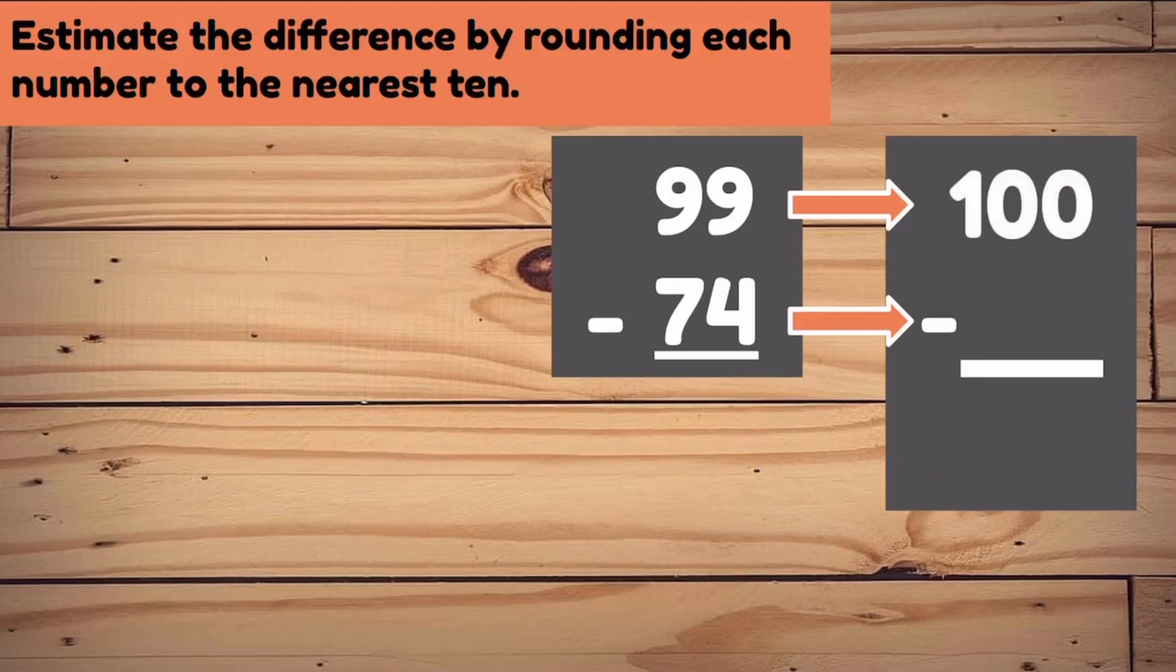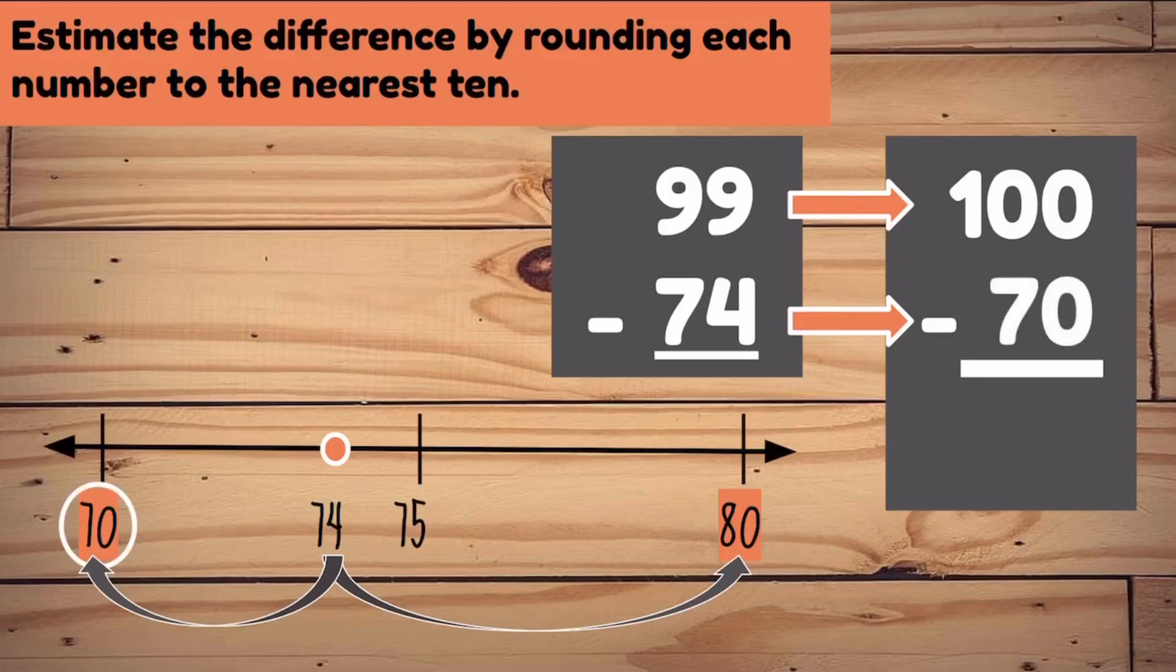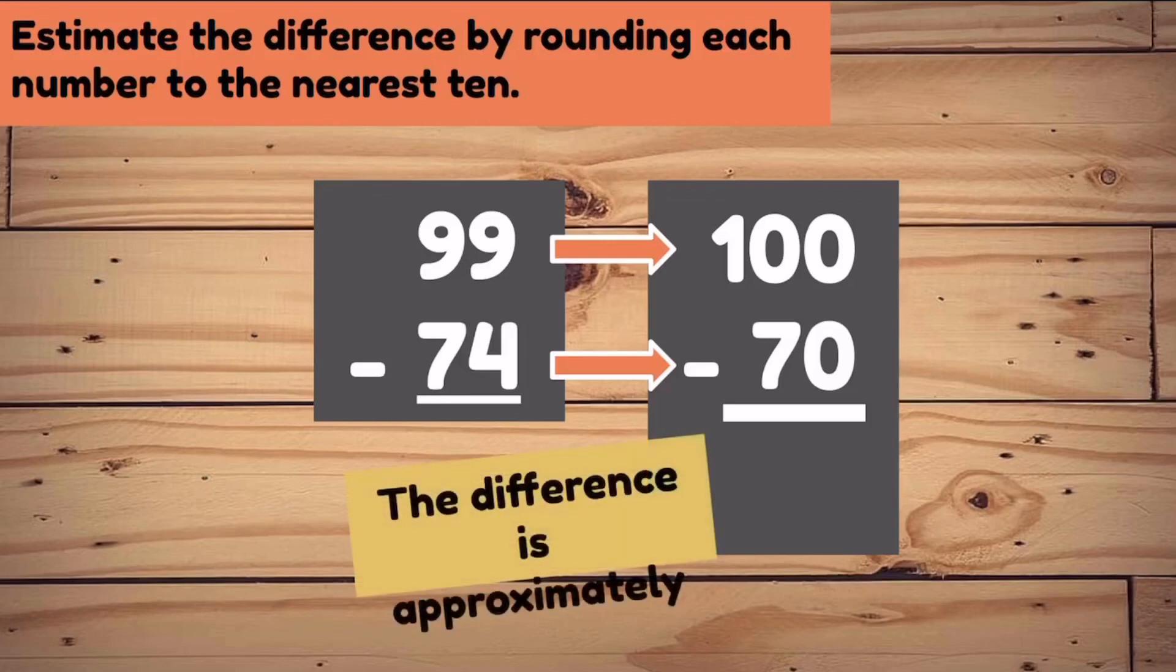Now we need to round 74. We know that the two 10s surrounding 74 are 70 and 80. Is 74 closer to 70, or is it closer to 80? It is much closer to 70, so 74 rounded to the nearest 10 is 70. Now we can easily subtract 100 take away 70 is 30. So we know that the difference is approximately 30.